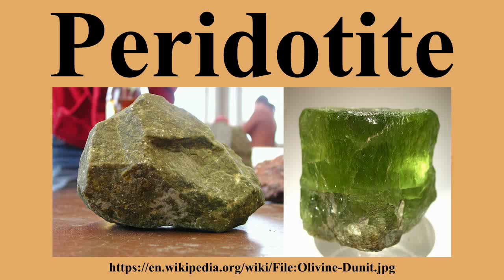Some peridotites, rich in amphibole, have a concentric layered structure and form parts of plutons called Alaskan-type zoned ultramafic complexes. Peridotites have two primary modes of origin: as mantle rocks formed during the accretion and differentiation of the earth, or as cumulate rocks formed by precipitation of olivine plus or minus pyroxenes from basaltic or ultramafic magmas. These magmas are ultimately derived from the upper mantle by partial melting of mantle peridotites.